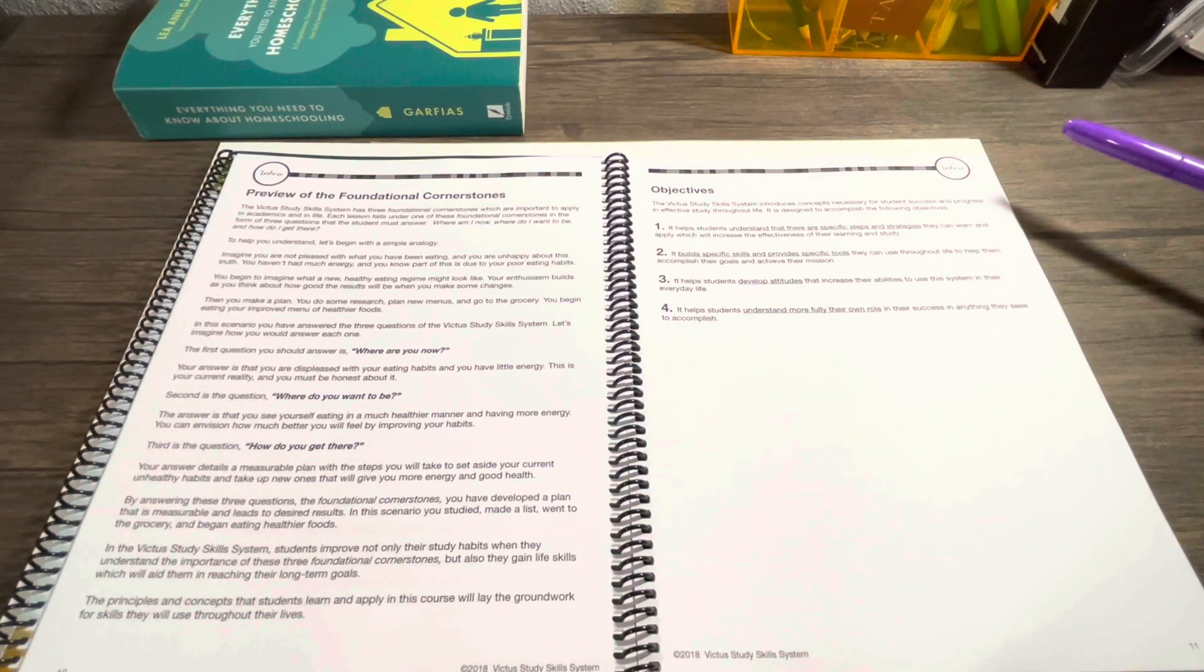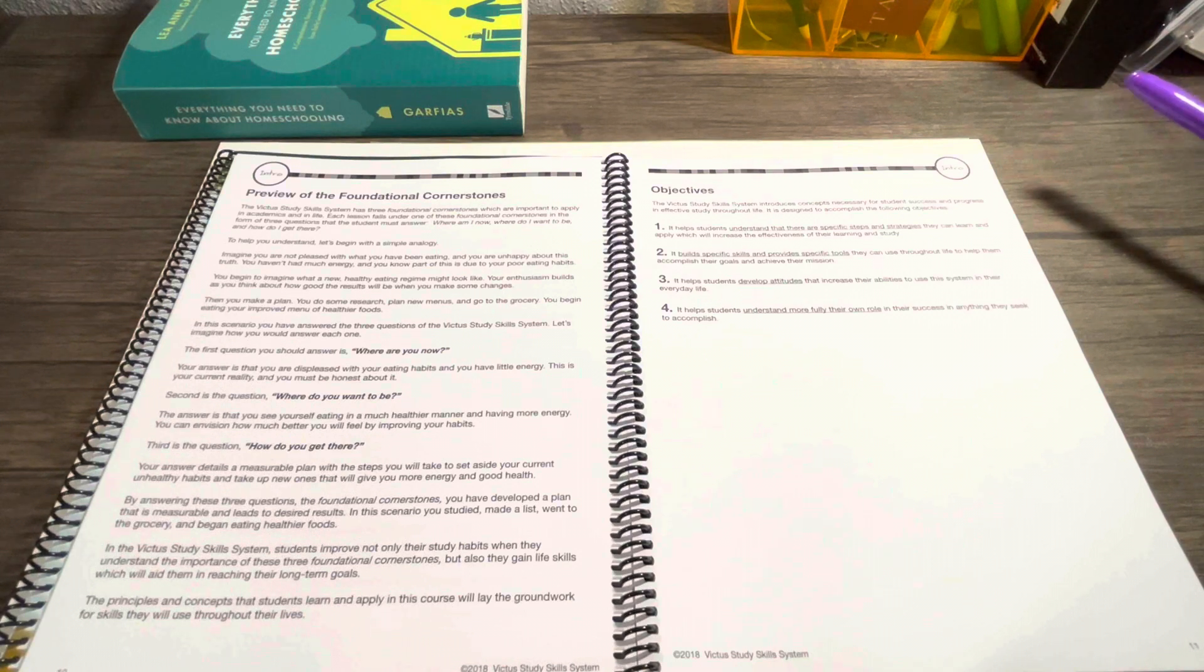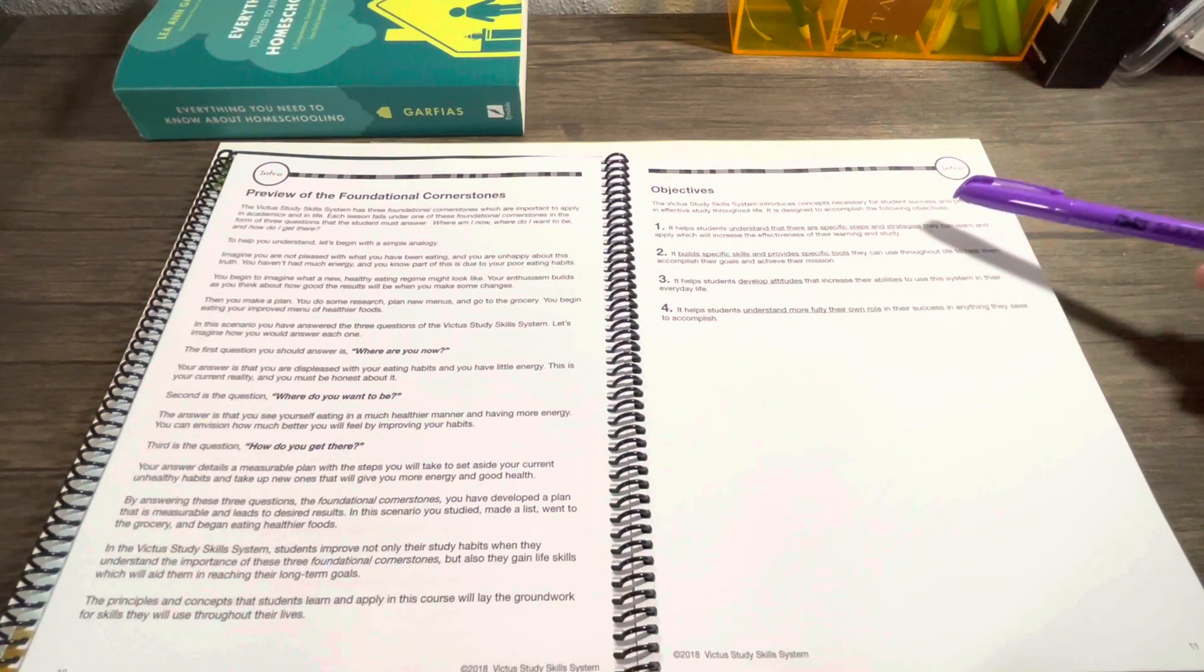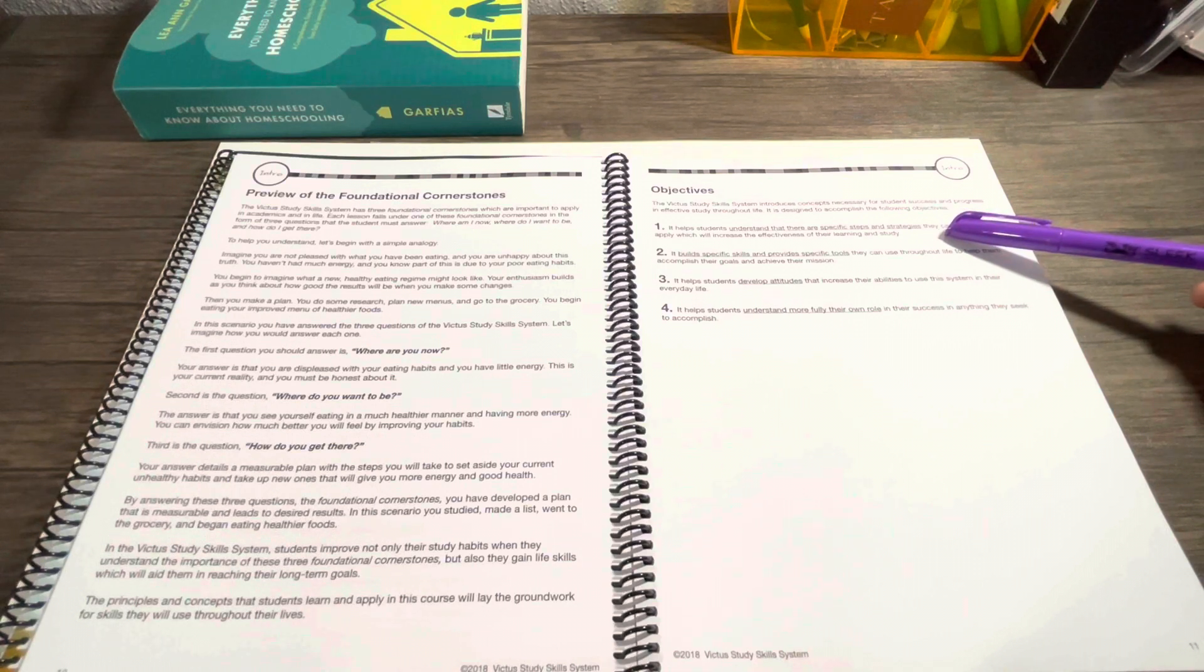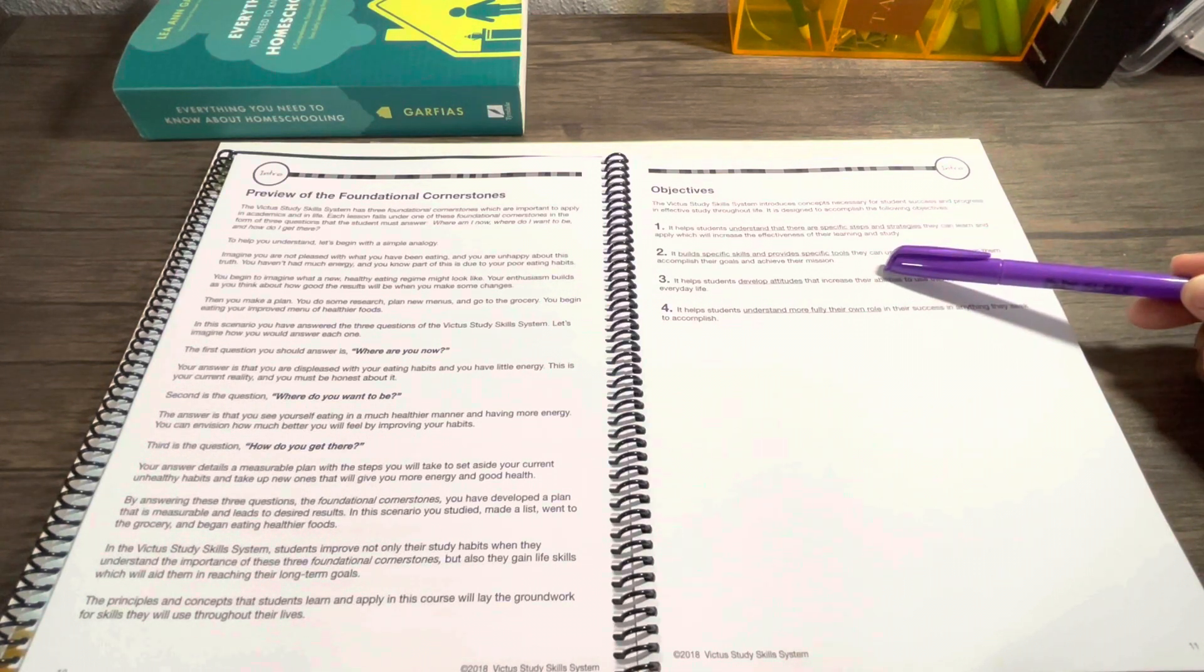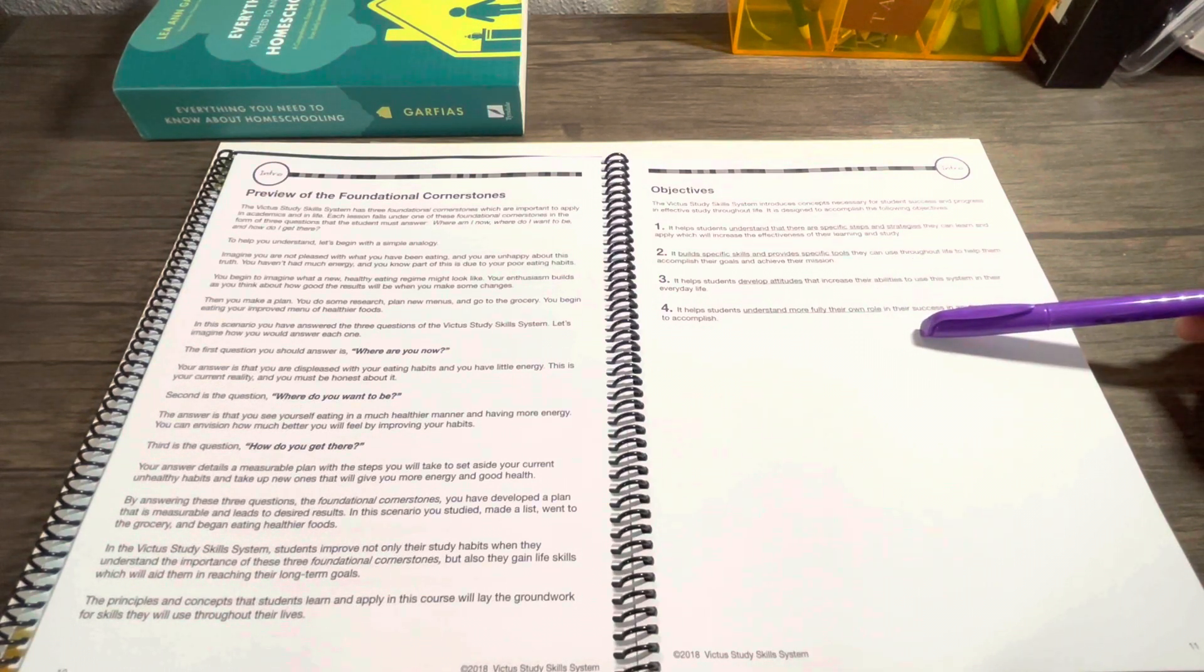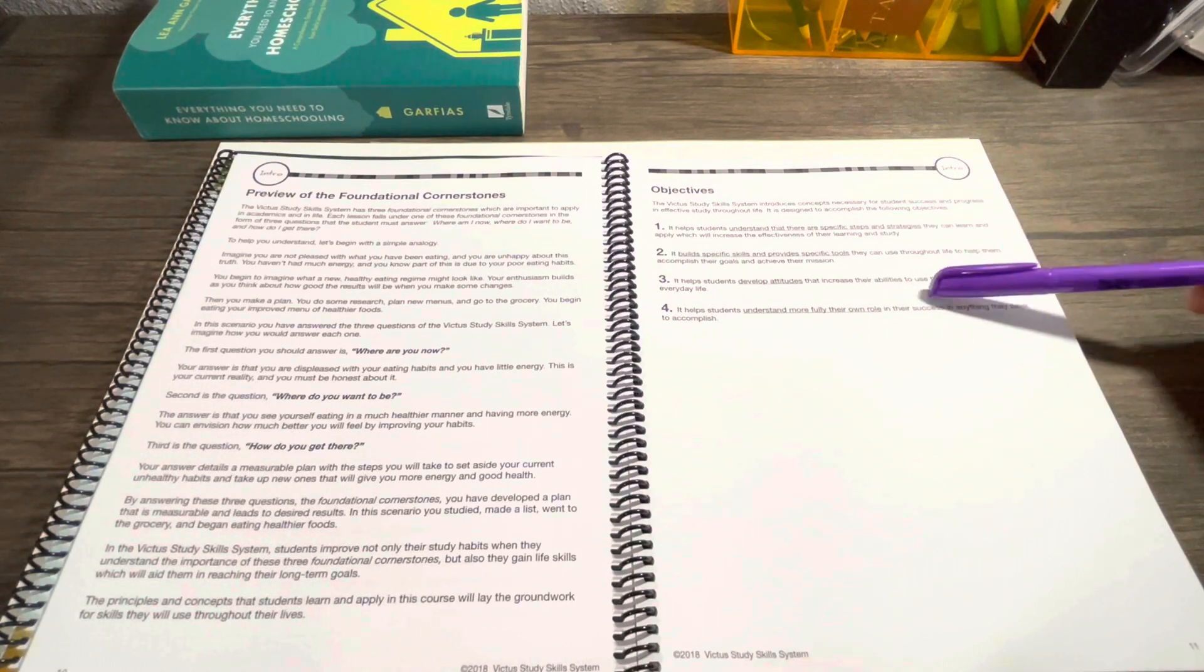This is not just for homeschool, this is to take them through life. As you remind them and review it and go through it with them at different times in the homeschool year, this will help them throughout life. It's designed to accomplish the following objectives: understand that there are specific steps and strategies, build skills and tools, develop attitudes, and help them understand more fully their own role in their success.